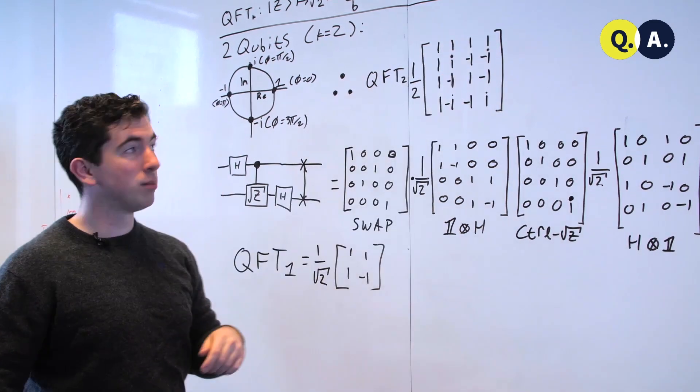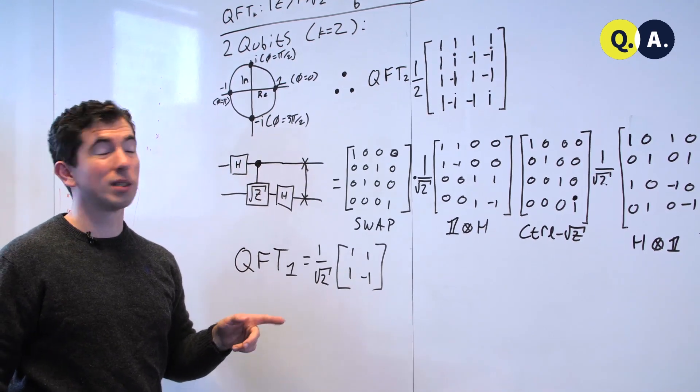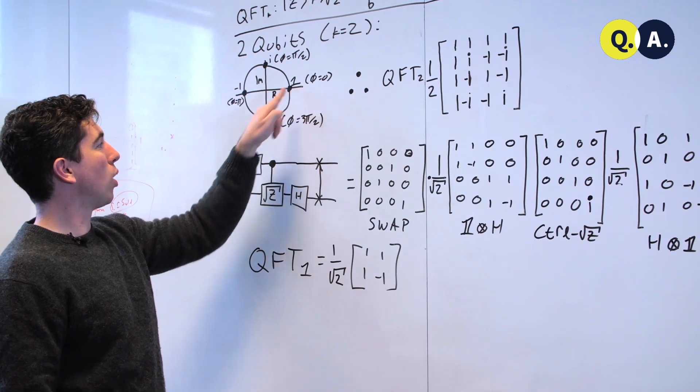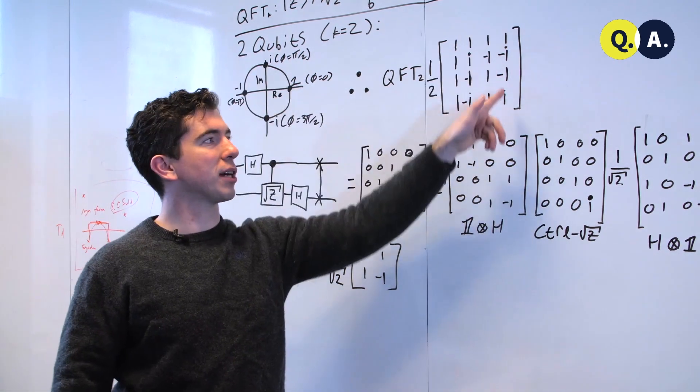If we take three steps at a time on a circle with four points on it, that's actually the same as taking one step backwards, and we can see that we have 1, -i, -1, i in the coefficients in the final column of the matrix.